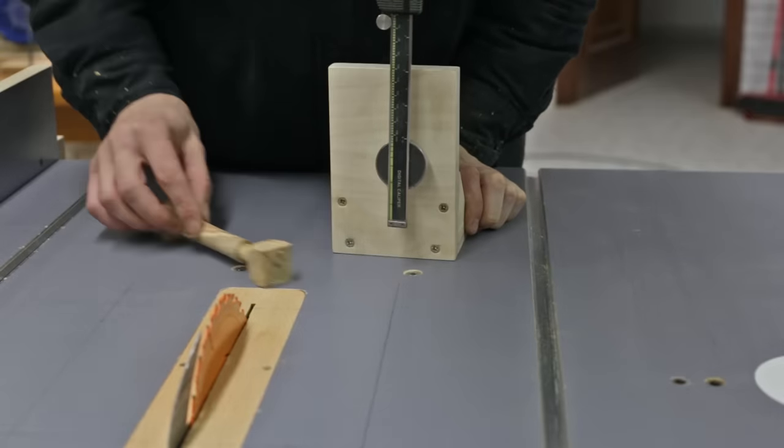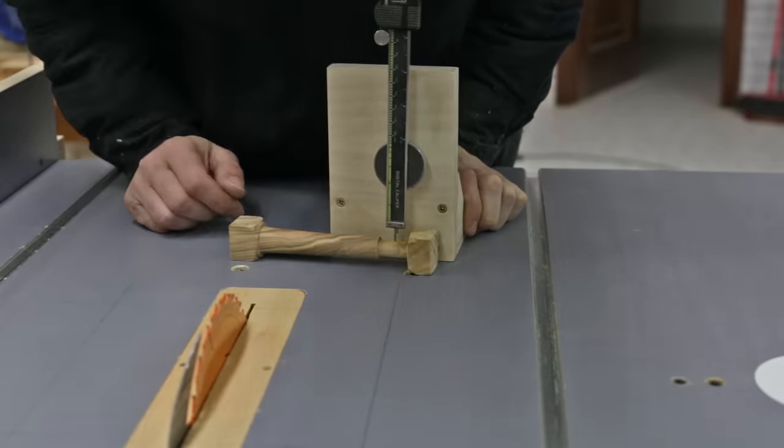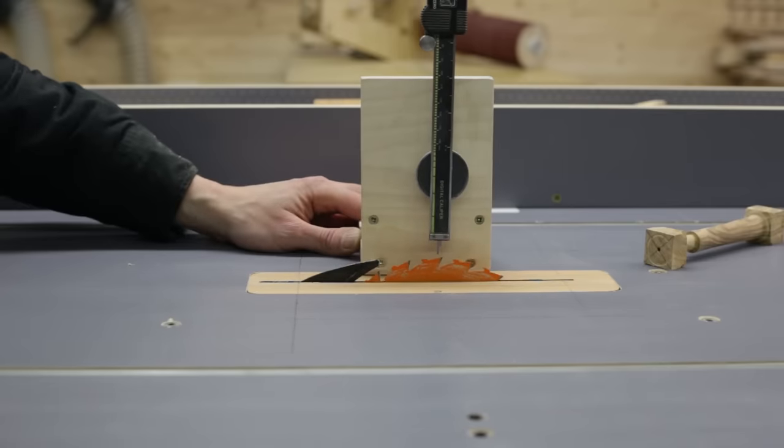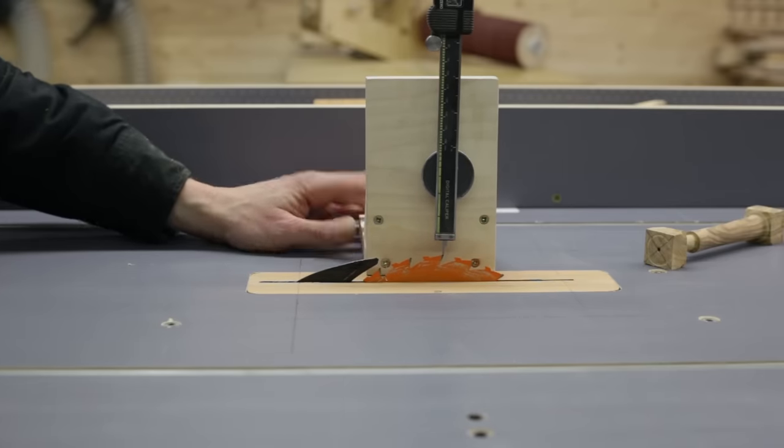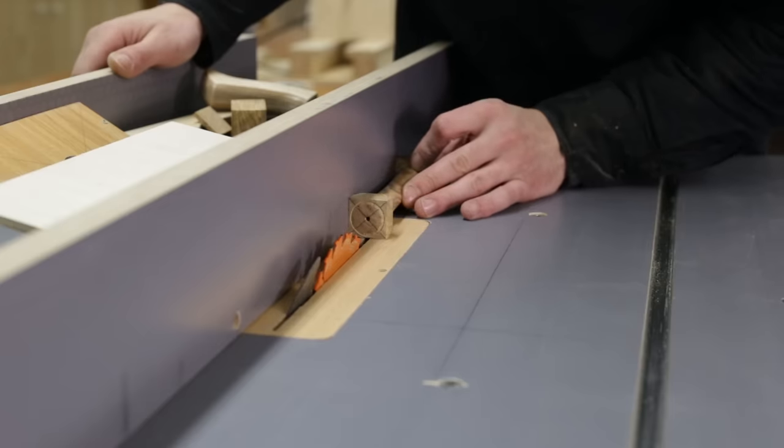With the table saw, I'll cut a groove on the handle to insert the blade. I check the height with a caliper and adjust the disc's height. We must make sure the groove is in the center of the wood.